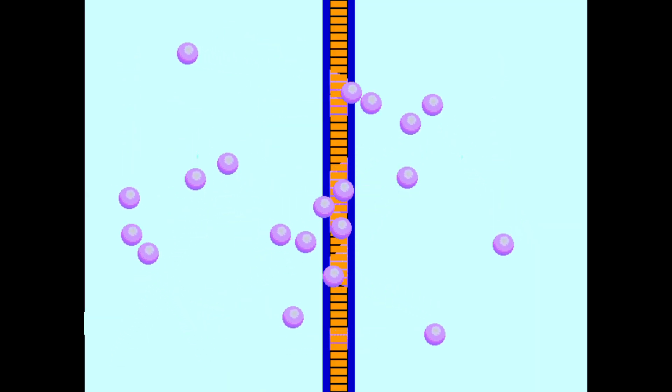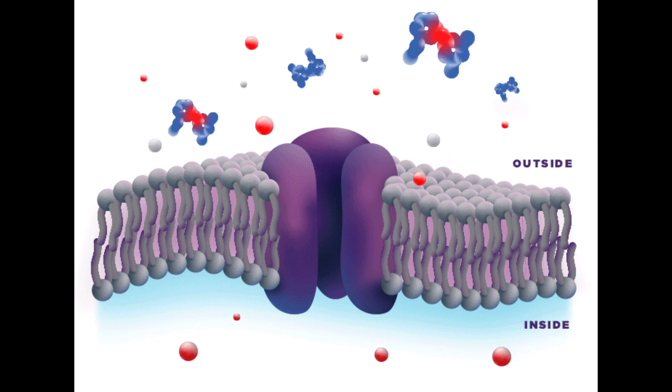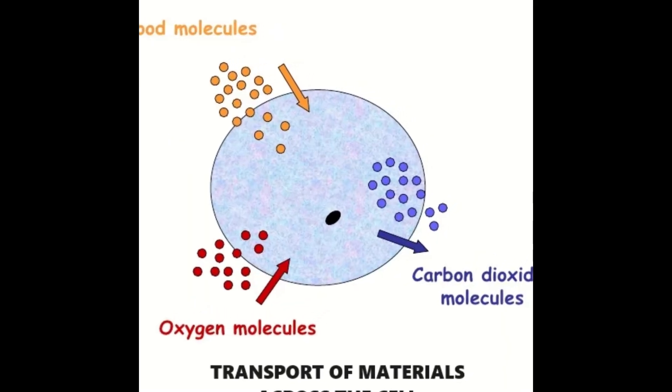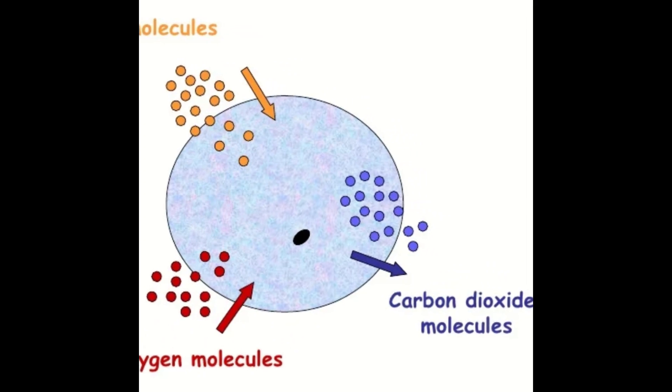There are three different ways that materials can be moved in and out of cells so they obtain the nutrients they need and remove any harmful waste substances produced.